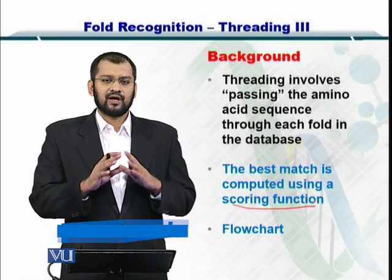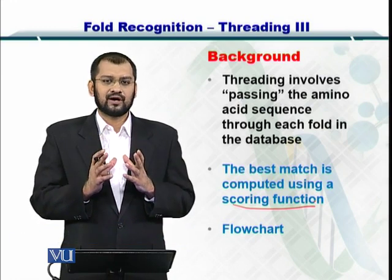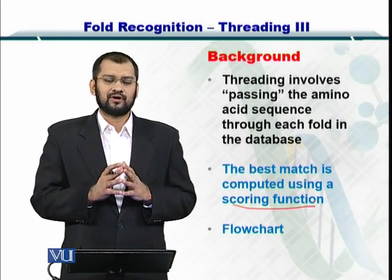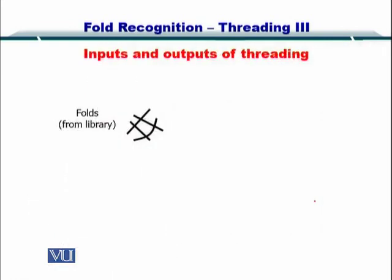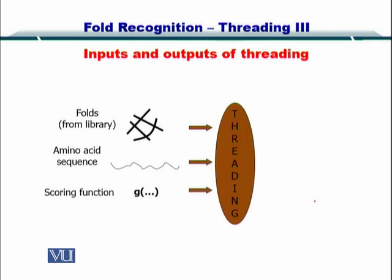Now let's take a look at the overall flowchart for threading in a step-by-step manner. The inputs and outputs first. The inputs are the folds from the fold library such as SCOP, the amino acid sequence — the primary sequence of the protein you want to predict the structure for — and the scoring function. These are input into the threading algorithm, and the output is the predicted structure.